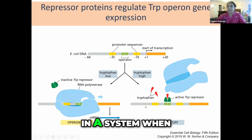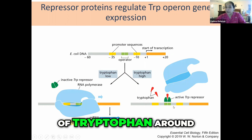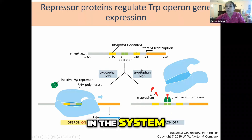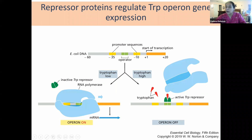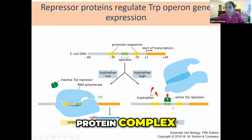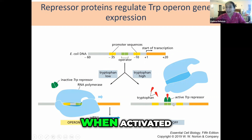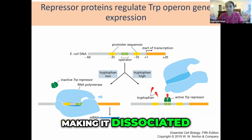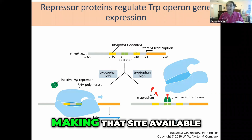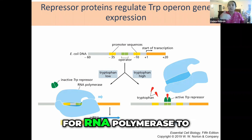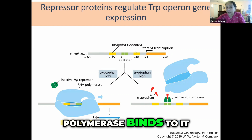In a system where there is a lot of tryptophan around, the tryptophan binds to a protein complex that binds to the operator sequence when activated, making it dissociated from the operator region, making that site available for RNA polymerase to bind to it.